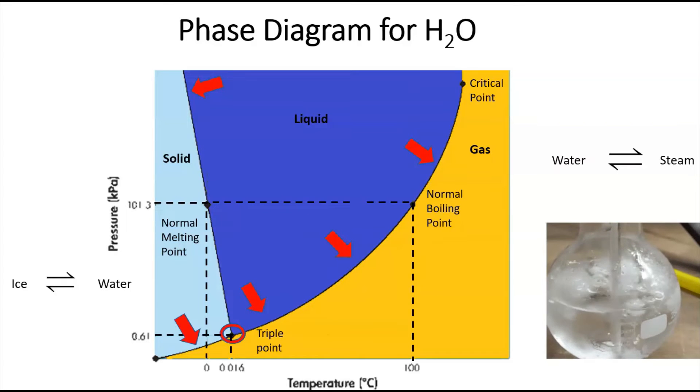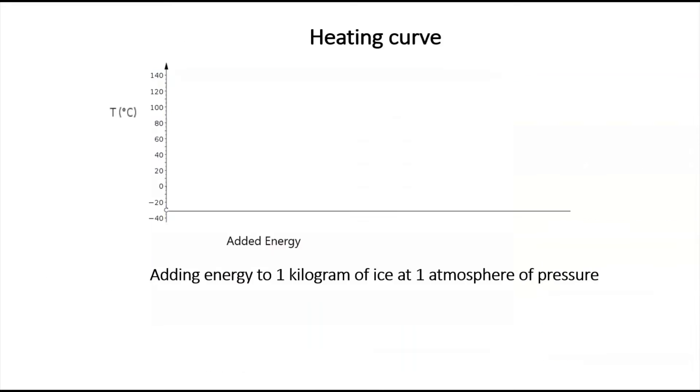But anyway, the bottom line on this phase diagram is that you can, one look, and you can tell the conditions of temperature and pressure for any of the states of matter pretty easily. So anyway, we're going to move on to a heating curve, which is also related because this shows basically what happens when you're adding energy to, in this specific case, one kilogram of ice at one atmosphere of pressure. So all the rest of this is going to be everything at one atmosphere.